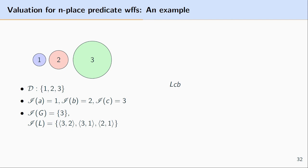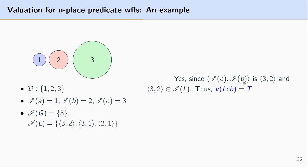How about LCB? Again, a two-place predicate followed by two names. We check whether the ordered pair consisting of the interpretation of C and the interpretation of B — that is, (3,2) — is found in the set of ordered pairs picked out by the interpretation of L. Since (3,2) is in the interpretation of L, the truth value of LCB is true.